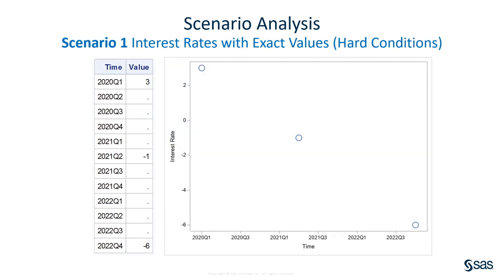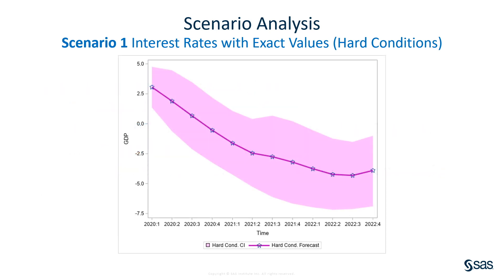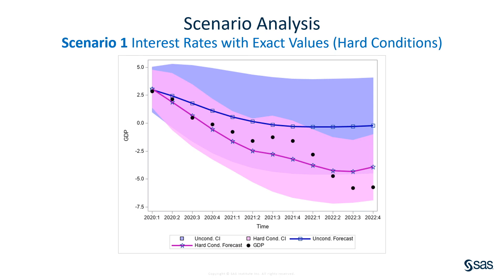Now let's assume that more future information is available, as shown in Scenario 1. Assume that the interest rates in the next three years are falling linearly. As shown in this table and plot, in the first scenario, three exact values in the future path of interest rates are known. You can find this out by using the COND4 statement in PROC VARMAX — COND4 stands for Conditional Forecast. Here is the Conditional Forecast for Scenario 1. Putting the unconditional forecast in the picture, you can see how different it is. Moreover, the Conditional Forecast has much better forecast performance than the unconditional forecast in this example.